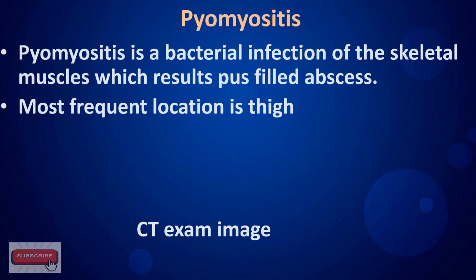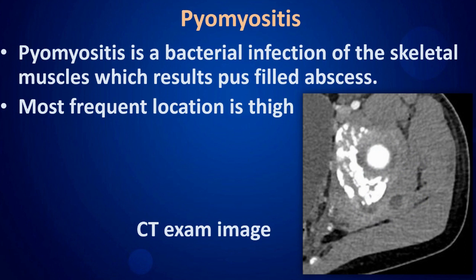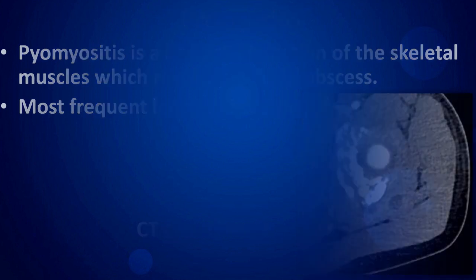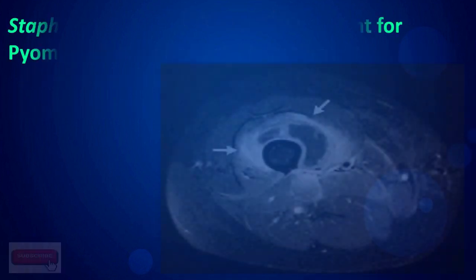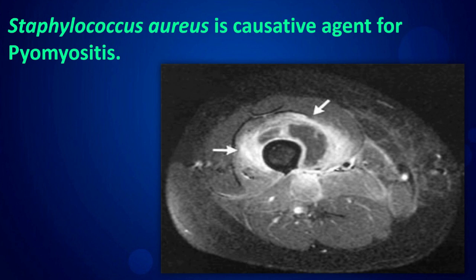Pyomyositis is a bacterial infection of the skeletal muscles which results in a pus-filled abscess. The most frequent location is the thigh, and Staphylococcus aureus is the causative agent.